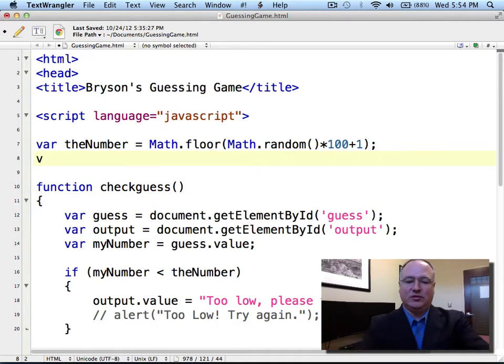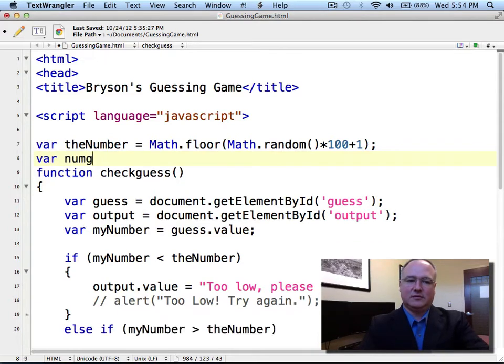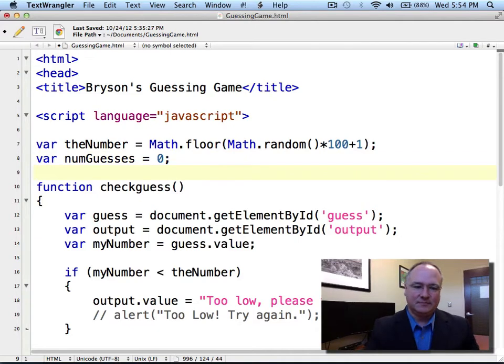I'm going to come into just about the second line of my script that I started with the last lab, and I'm going to create another variable called the number of guesses. And I'll abbreviate that as numGuesses. I'm going to set that number of guesses initially equal to zero because I haven't guessed anything yet.